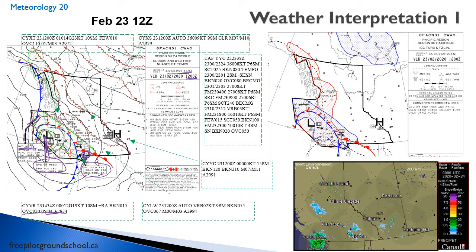Looking at Kelowna at 12 Zulu, the GFA calls broken layers at bases 4,000 to 6,000, plus six statute miles with occasional altocumulus castellanus. The METAR for Kelowna shows light winds, broken at 5,500 feet AGL — Kelowna is about 1,500 feet elevation, so that's about 7,000 feet ASL. The ceiling is about what was forecast on the GFA. For Calgary — which is outside this GFA region — the METAR shows 15 miles visibility, broken at 12,000 feet, which is quite nice.